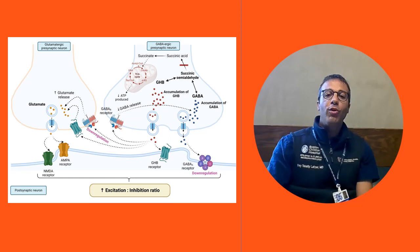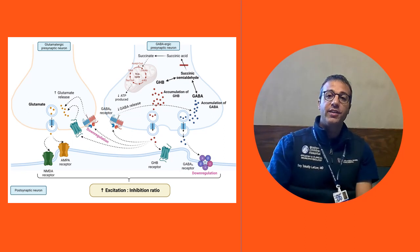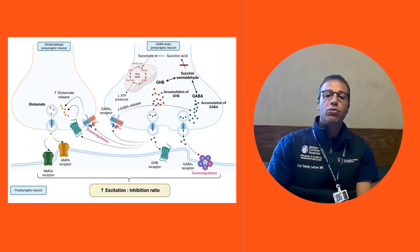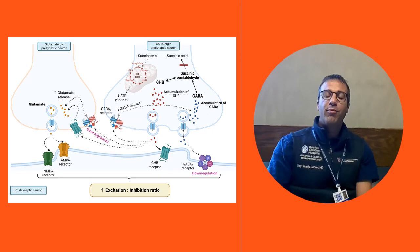It's far more complex than a simplified increased or decreased excitation-inhibition ratio, because what we see in SSADH deficiency is that over time GABA levels decline, and this is probably due to the down-regulation of the GABA receptors in these patients.